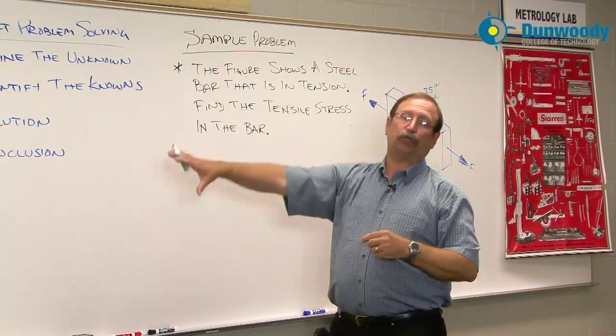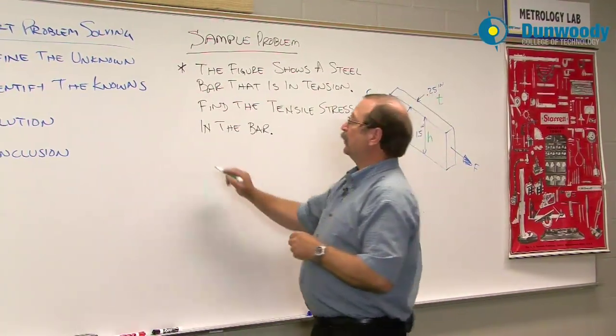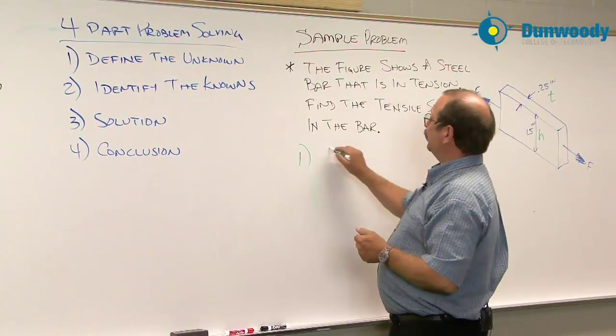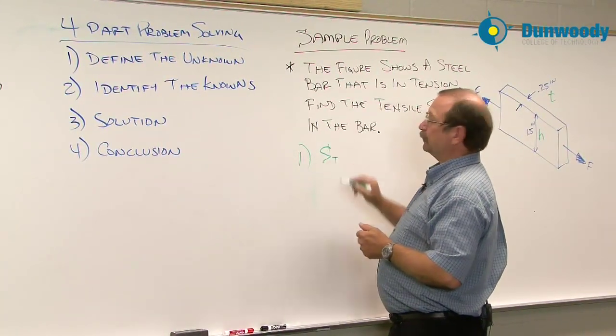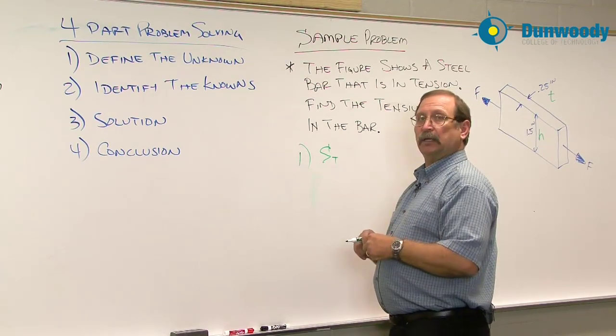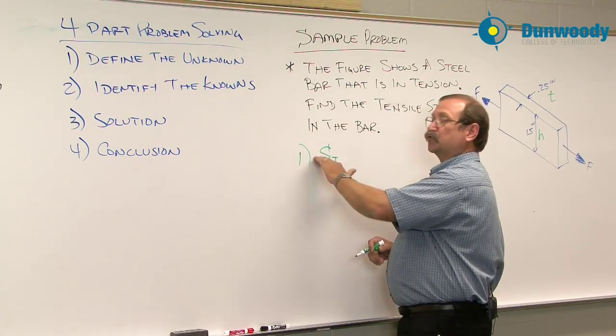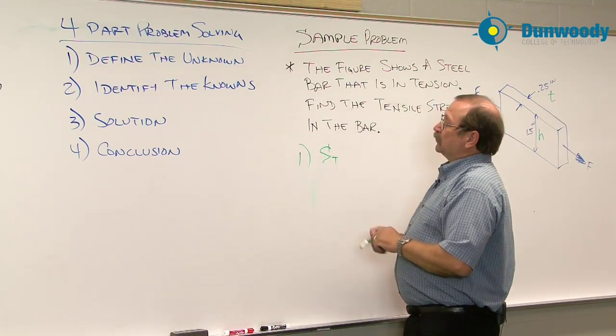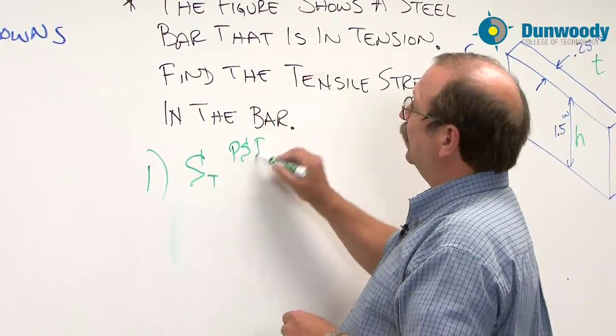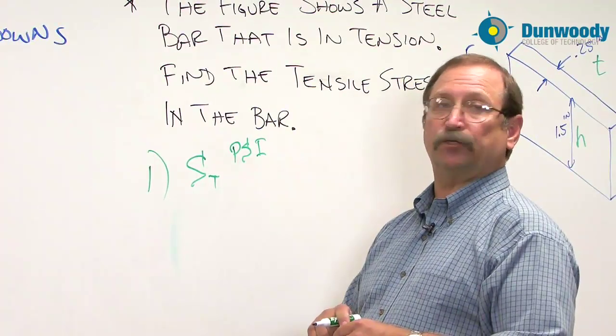Now that we have the problem, we can start going through and using the four steps here. In our first step, we want to know what is our unknown. That's going to be our variable S sub T, the stress due to tension, tensile stress. The units on this are going to be in PSI, pounds per square inch.